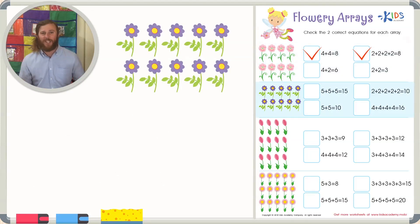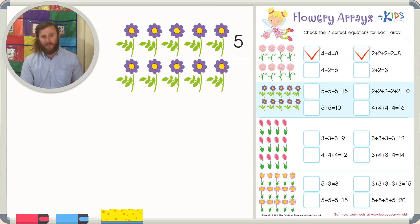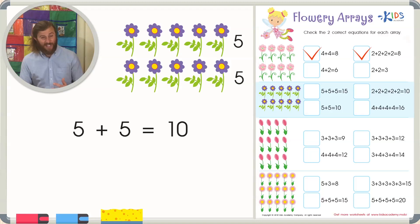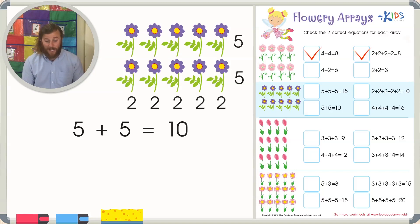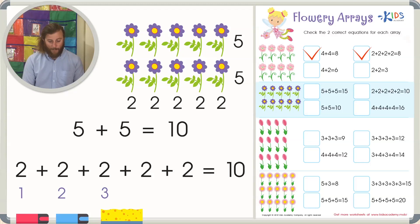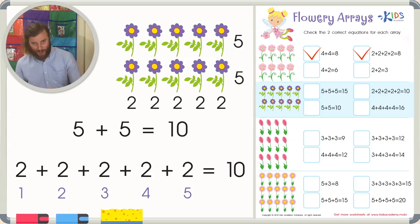Let's move on to the next array. Let's count the flowers in each row — one, two, three, four, five flowers in the first row, so there must also be five in the second row. Our first equation is simply five plus five. If you don't know what five plus five equals, you can count the flowers, but if you do, you'll know it's ten. Now let's count the columns — there are two in each column and five columns total, so we write two plus two plus two plus two plus two, and five twos also equals ten.